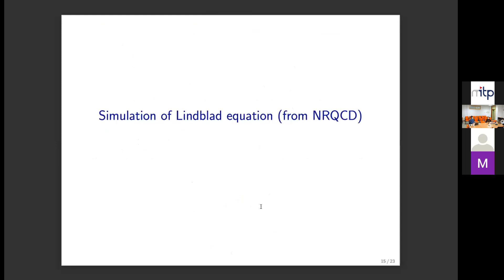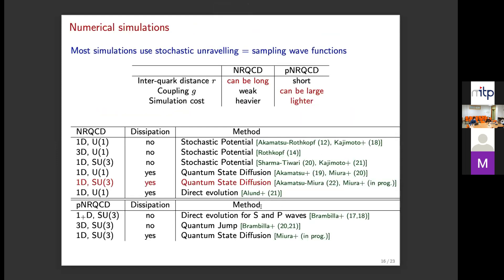The first part is over. Let's move to the second part: simulation of the Lindblad equation. Most simulations use the stochastic unraveling method. Comparing NRQCD and pNRQCD Lindblad equations, the simulation cost of NRQCD is much heavier because it has essentially infinite Lindblad operators, while pNRQCD has only about six.